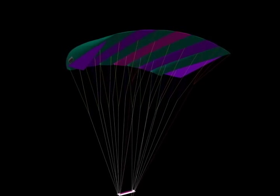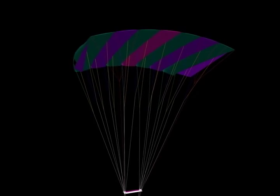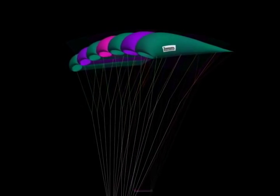For the purpose of seeing the lines better in this graphic, we will remove the stabilizers. Now we can move on to the suspension lines.